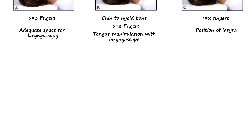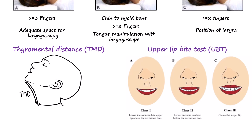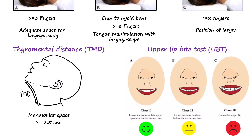Along with the LEMON criteria, the assessment can also include the thyromental distance and the upper lip bite test. The thyromental distance is measured from the thyroid notch to the tip of the chin with the neck fully extended — a measurement of less than 6.5 cm, or approximately three finger breadths, suggests limited space. The upper lip bite test evaluates mandibular mobility and dental architecture; restricted movement or inability to reach the vermilion border of the upper lip correlates with reduced oral access and more challenging glottic visualization.